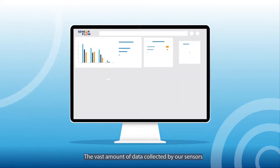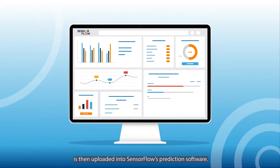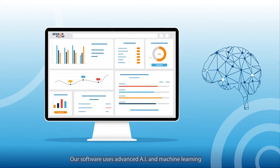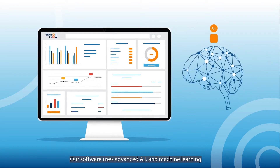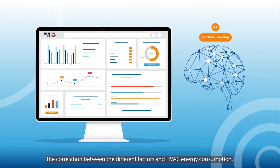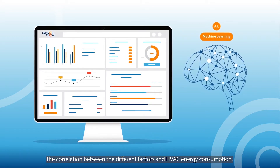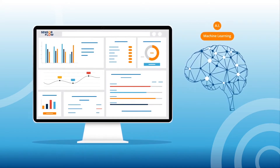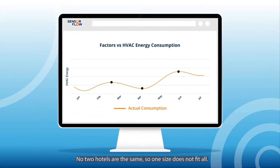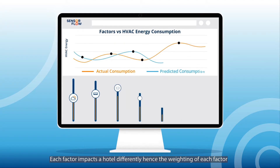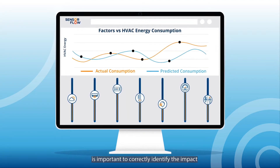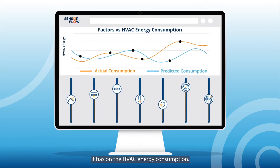The vast amount of data collected by our sensors is then uploaded into SensorFlow's prediction software. Our software uses advanced AI and machine learning to help us build a prediction model that accurately identifies the correlation between the different factors and HVAC energy consumption. No two hotels are the same, so one size does not fit all. Each factor impacts a hotel differently, hence the weighting of each factor is important to correctly identify the impact it has on the HVAC energy consumption.